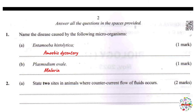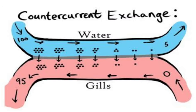Question 2: state two sites in animals where countercurrent flow of fluids occurs. Let us remind ourselves of what the countercurrent system is about. The countercurrent system is a mechanism whereby you're going to have fluids — for example, blood and water — flowing in opposite directions.